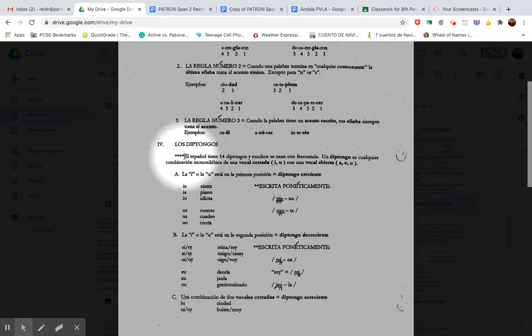And then one last translation is where you see these asterisks. Just this sentence, el español. It's a long sentence. El español tiene catorce diptongos. Muchos se usan con frecuencia. Un diptongo es cualquier combinación monosyllábica de una vocal cerrada, I-R-U, E-O-U, con una vocal abierta, A-E-O.